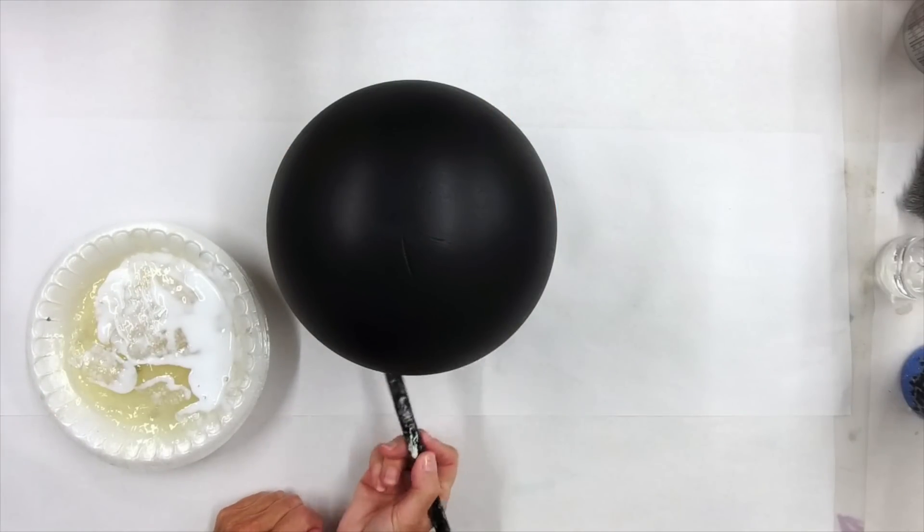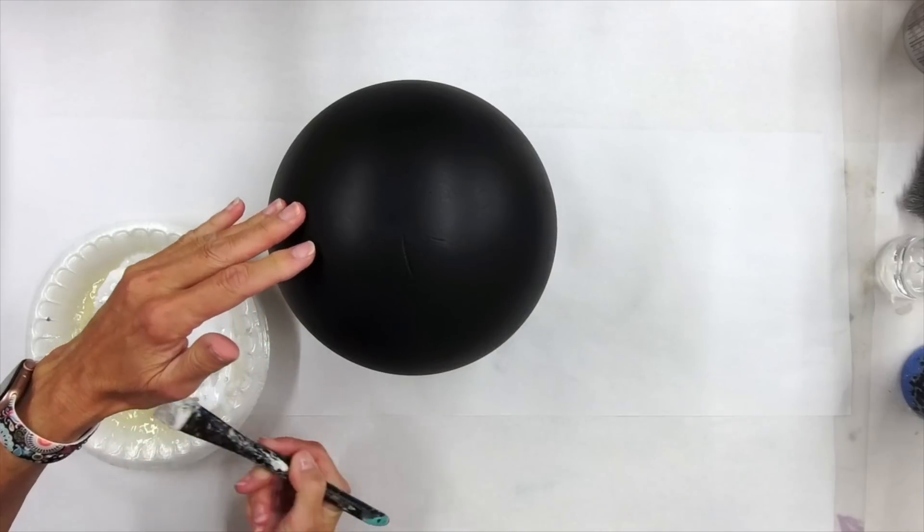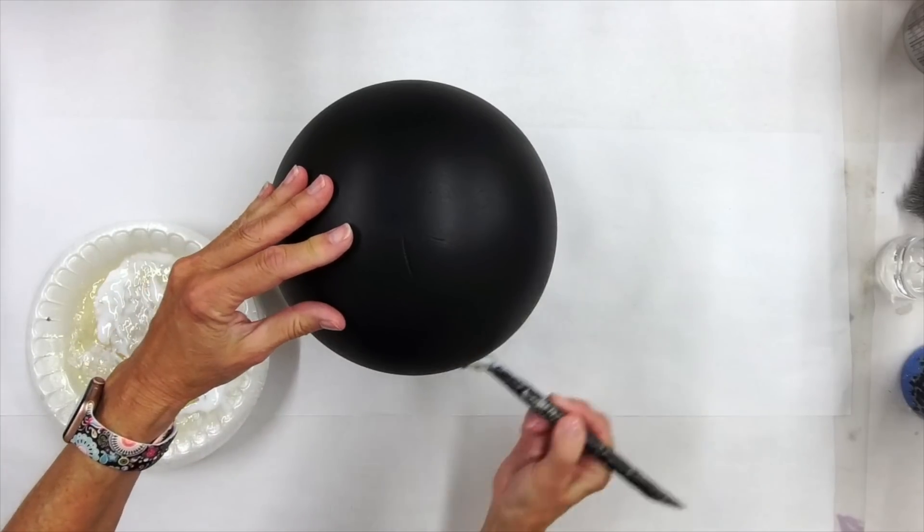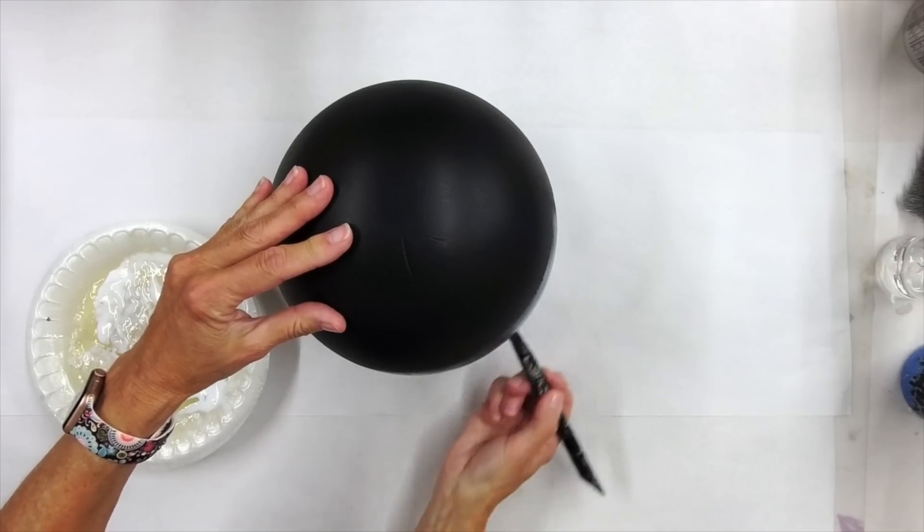And I'm just going to try to get this on there to the best of my ability and finish this out. So a little bit more about the foil adhesive. As you can see, it does go on milky white looking.